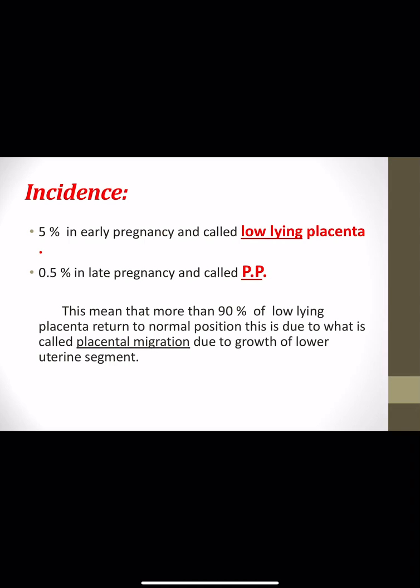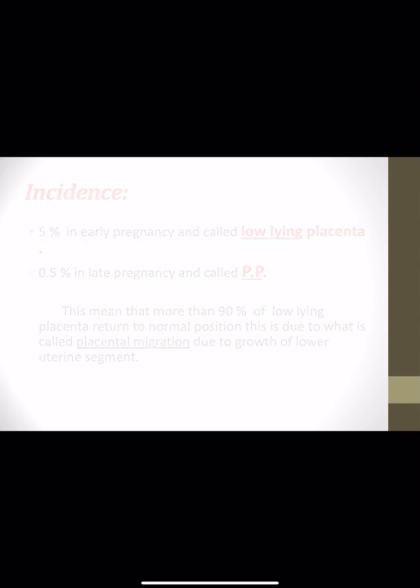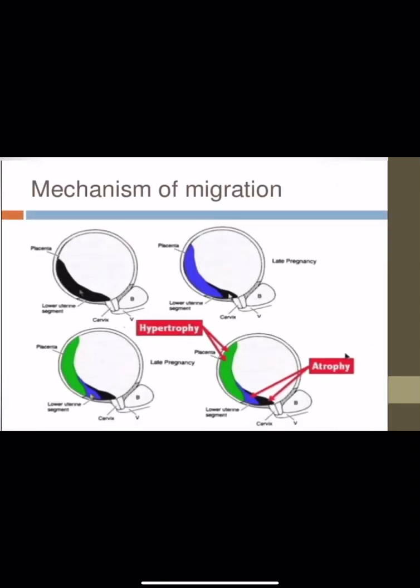Placental migration doesn't mean the placenta actually migrates, but is due to growth of the lower uterine segment, causing the placenta to appear higher up. This diagram shows the mechanism: there is growth of the lower uterine segment along with atrophy in the lower edge of the placenta and hypertrophy in the upper edge of the placenta.